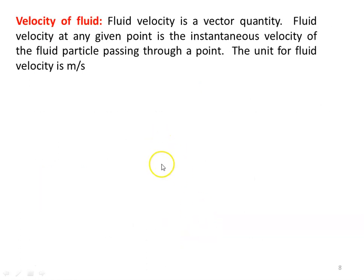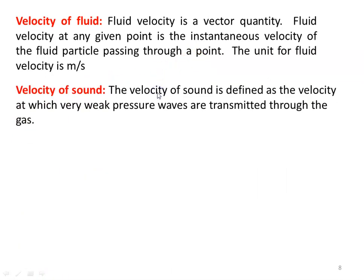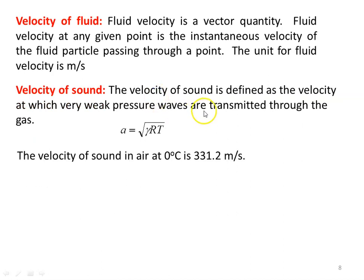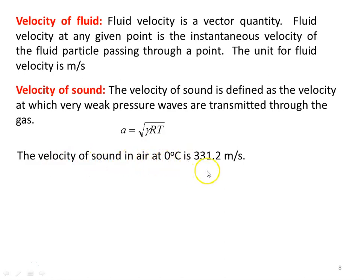Fluid velocity is a vector quantity. The fluid velocity at any given point is the instantaneous velocity of the fluid particle passing through that point, measured in meters per second. Velocity of sound is defined as the velocity at which very weak pressure waves are transmitted through gases: a equals square root of (gamma × R × T). For air, gamma equals 1.4 and R equals 287. For example, the velocity of sound in air at 0 degrees Celsius is 331 meters per second.